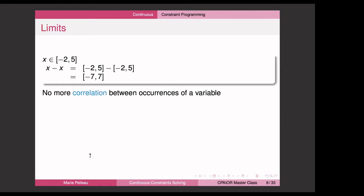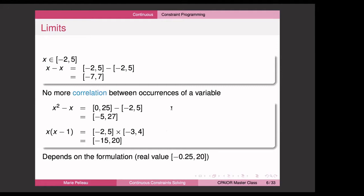There are limits to interval arithmetic. For instance, x minus x will never evaluate to zero using interval arithmetic, even though we know it's zero, because we lose correlation between multiple occurrences of the same variable. The result also depends on the formulation. For instance, x squared minus x and x times (x minus 1) are the same constraint, but they produce different resulting intervals because you again lose correlation between variables.